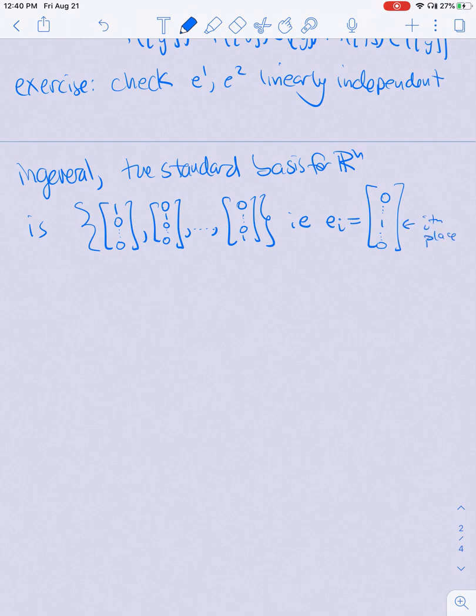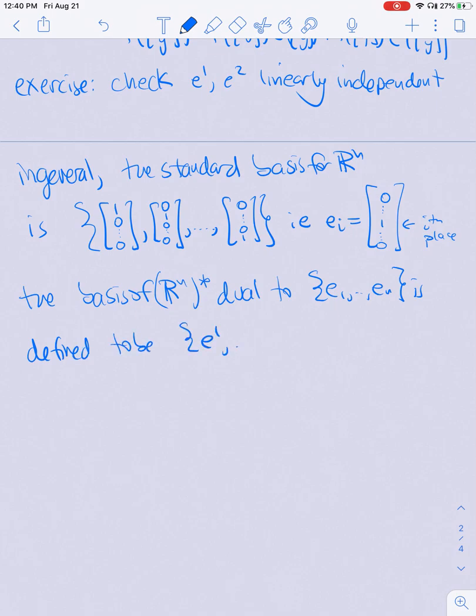Then I can define the basis of Rⁿ star dual to the basis E₁ through Eₙ is defined to be the set E¹ through Eⁿ where Eʲ of Eᵢ is 1 if i equals j and 0 otherwise. This is an exact generalization of the case of R² that we discussed above.